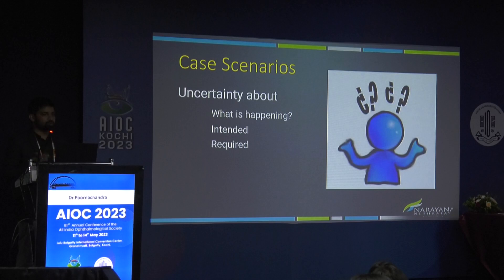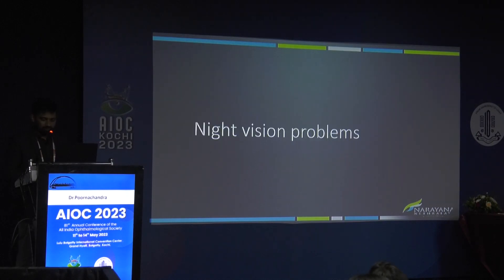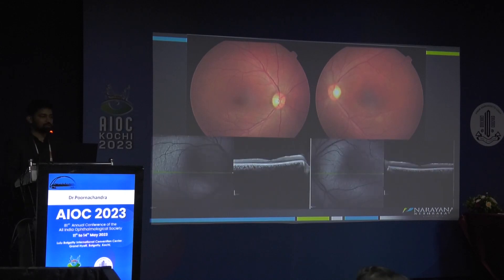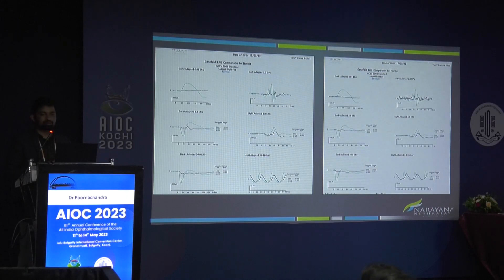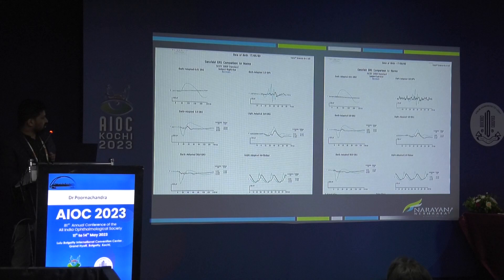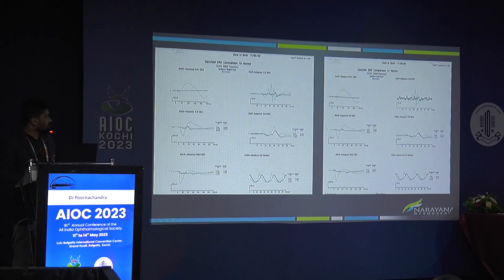The first case is a 25-year-old male presenting with night vision problems. Fundus examination, clinical examination, and OCT were all absolutely normal. Since the patient's symptoms were unexplained, malingering was suspected. An electrophysiological test was ordered. On the full field ERG, the normal range is shown in blue and the patient's waveform in black. The dark-adapted 0.01 ERG was almost flat with no detectable rod-driven responses.